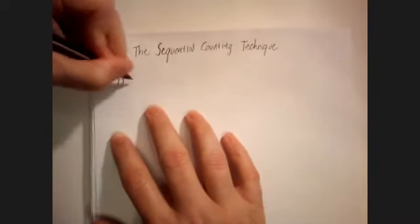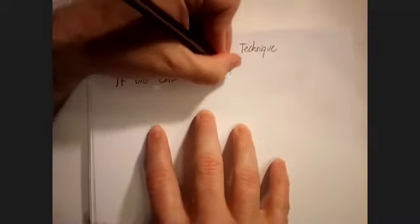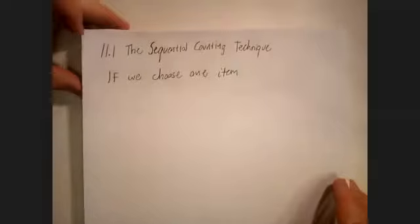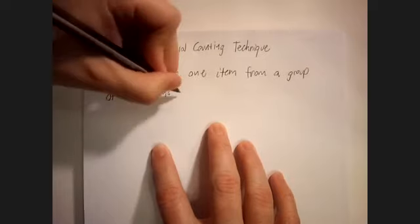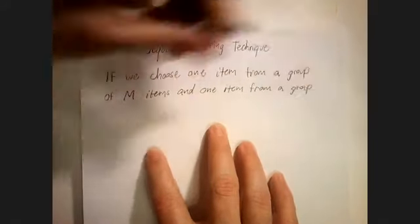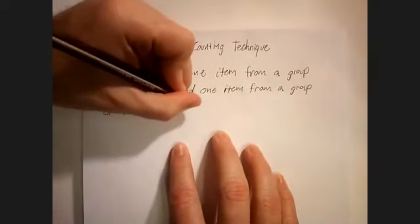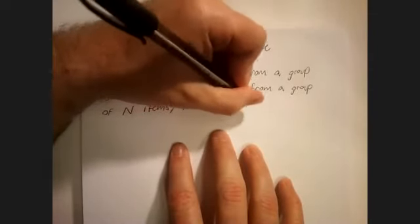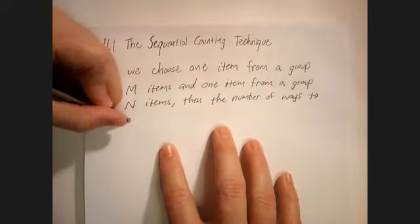This means that if we choose one item from a group of M items and one item from a group of N items, then the number of ways to choose one item from each group is M times N ways.